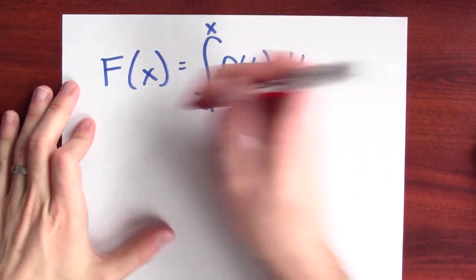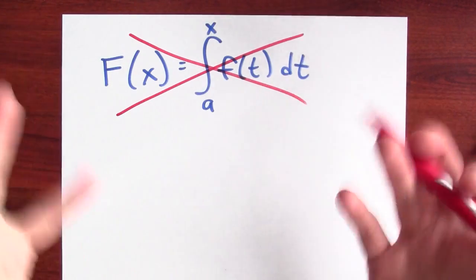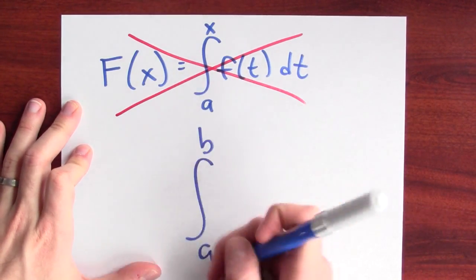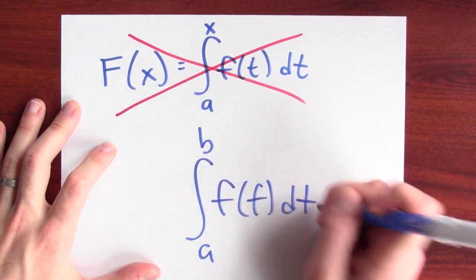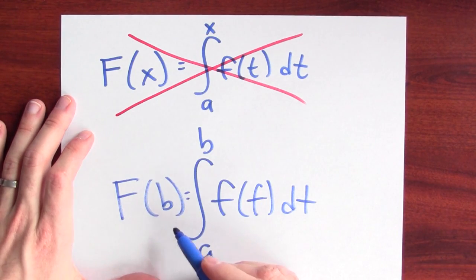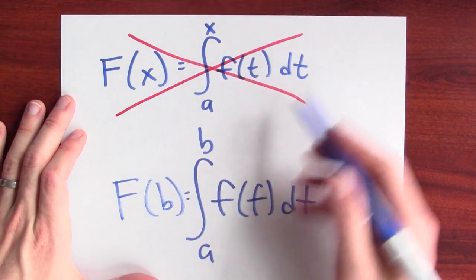What is it that I want to calculate? Well, what you don't really want to calculate is this. I mean, who really cares about big F? The only thing you really care about is the integral from a to b of f of t dt. You only really want to calculate big F of b.